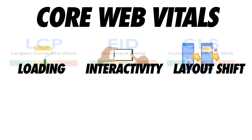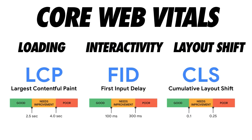So the three metrics that the Core Web Vitals include are Largest Contentful Paint, Cumulative Layout Shift, and First Input Delay. And these are the things that correspond to loading, interactivity, and layout shift.